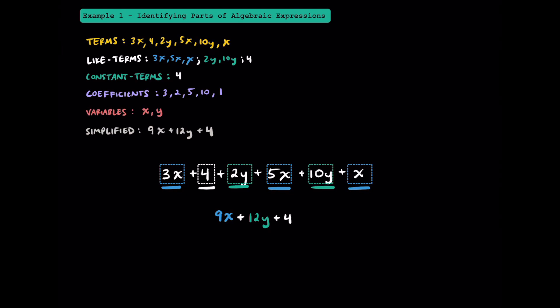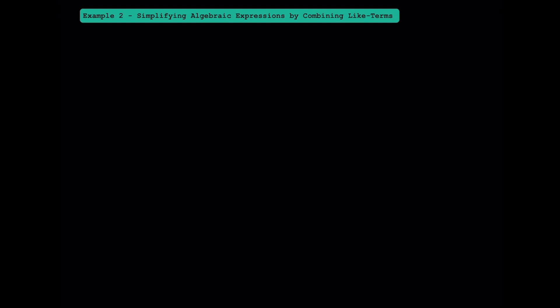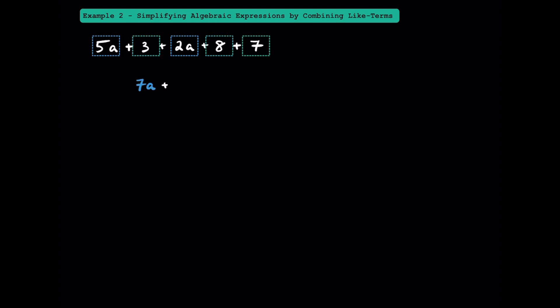Hopefully you understand these vocab words a little better now. Here in example 2, let's practice simplifying algebraic expressions by combining like terms. This 5a and 2a are like terms and can be combined to make a total of 7a. This 3, 8, and 7 are constant terms which are like terms and can be combined. 3 plus 8 is 11, and 11 plus 7 is 18.